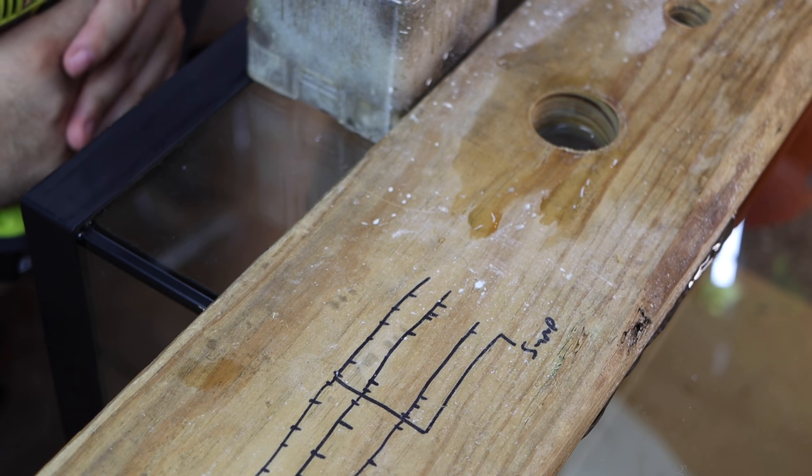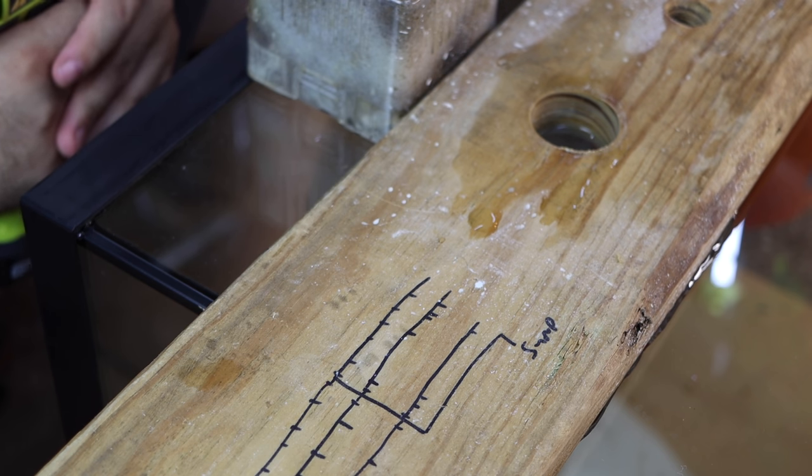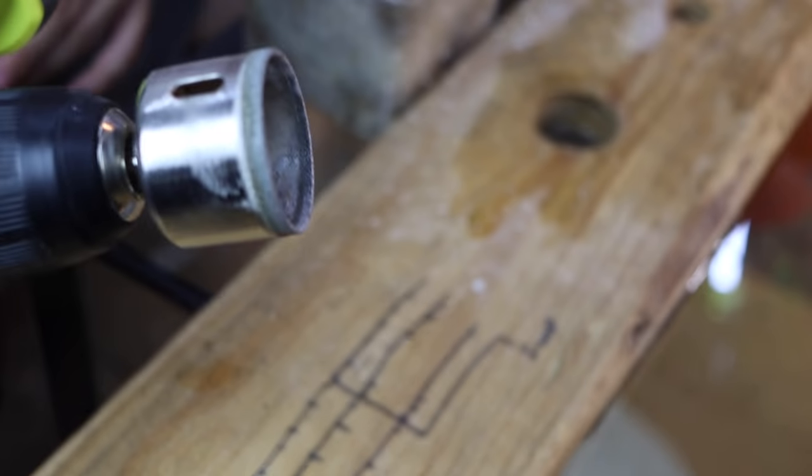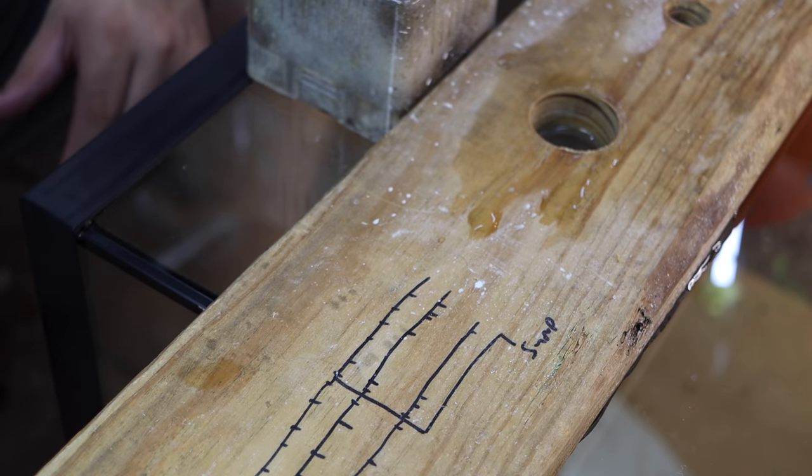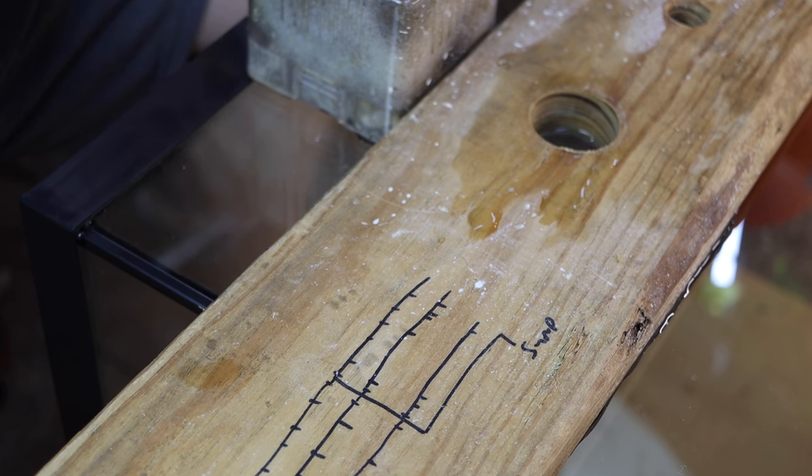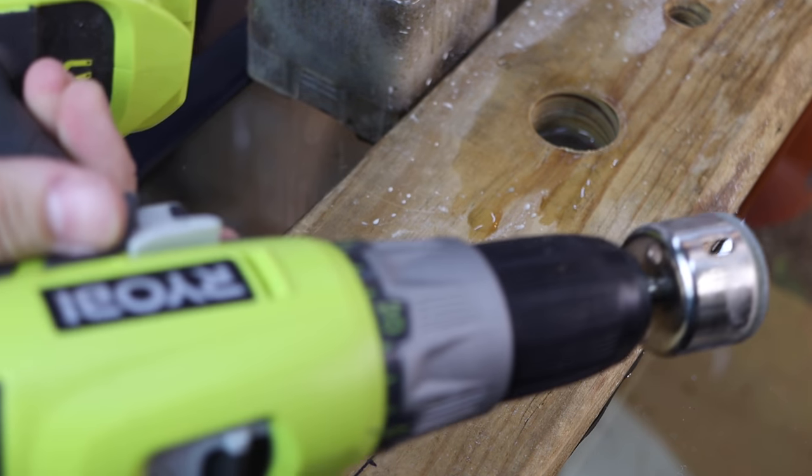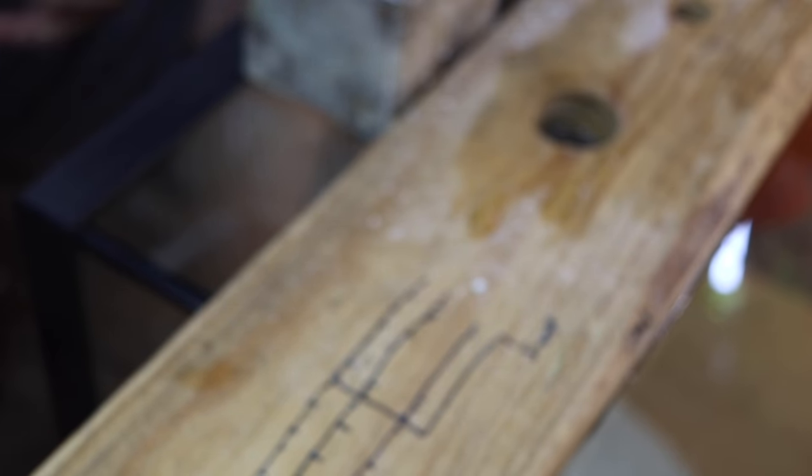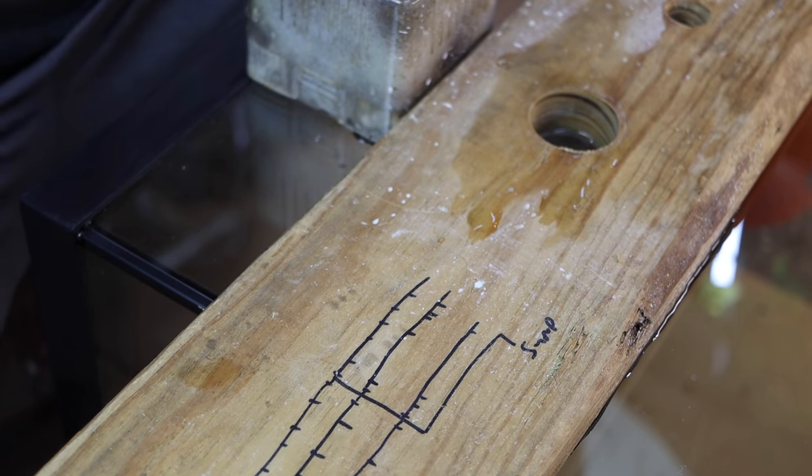I can probably get eight tanks out of one of these bits, maybe less. The trick here is just steady pressure, just a regular drill. It's an 18 volt Ryobi drill from Home Depot. Here we go.